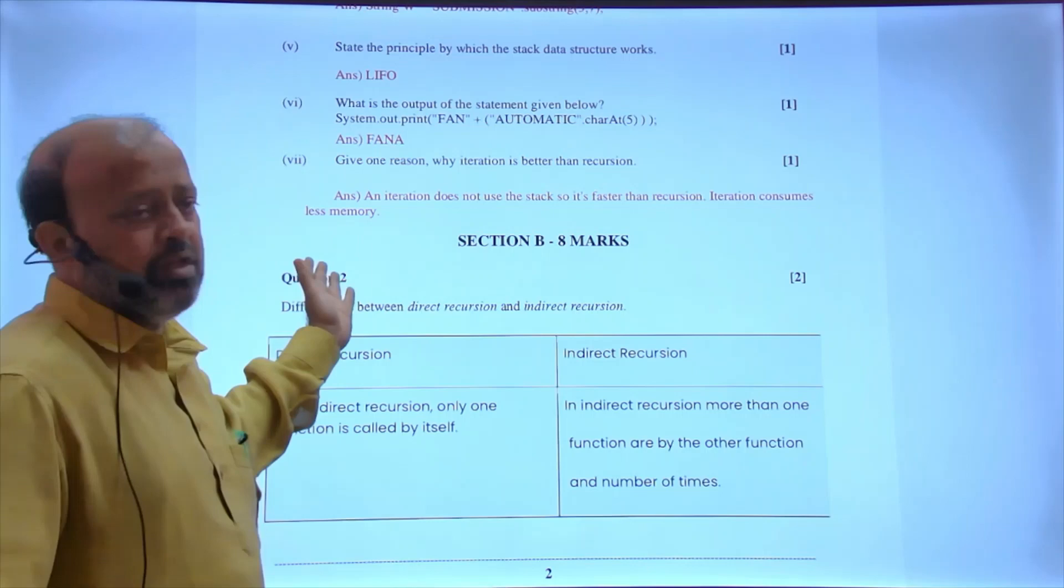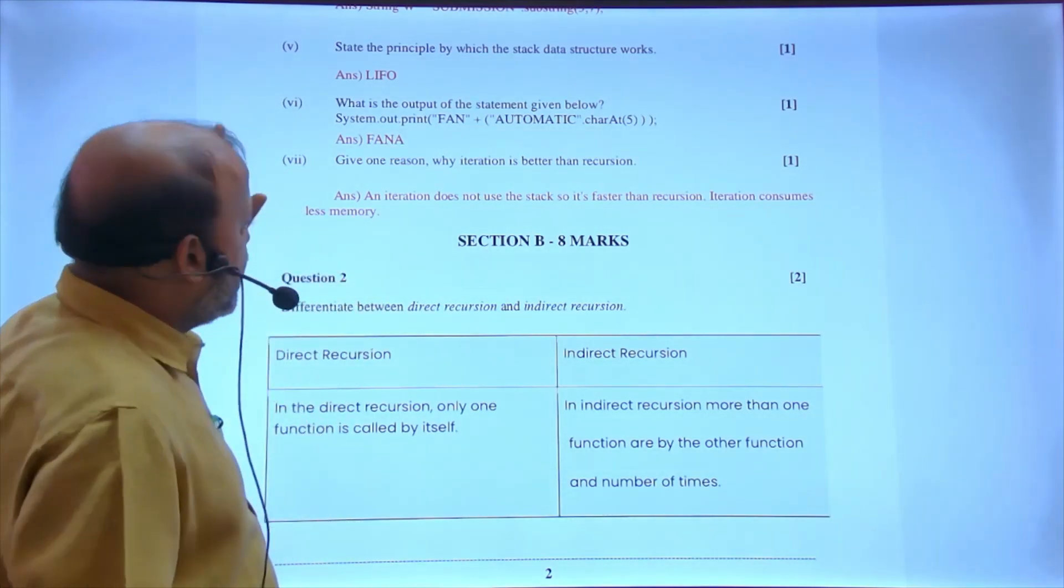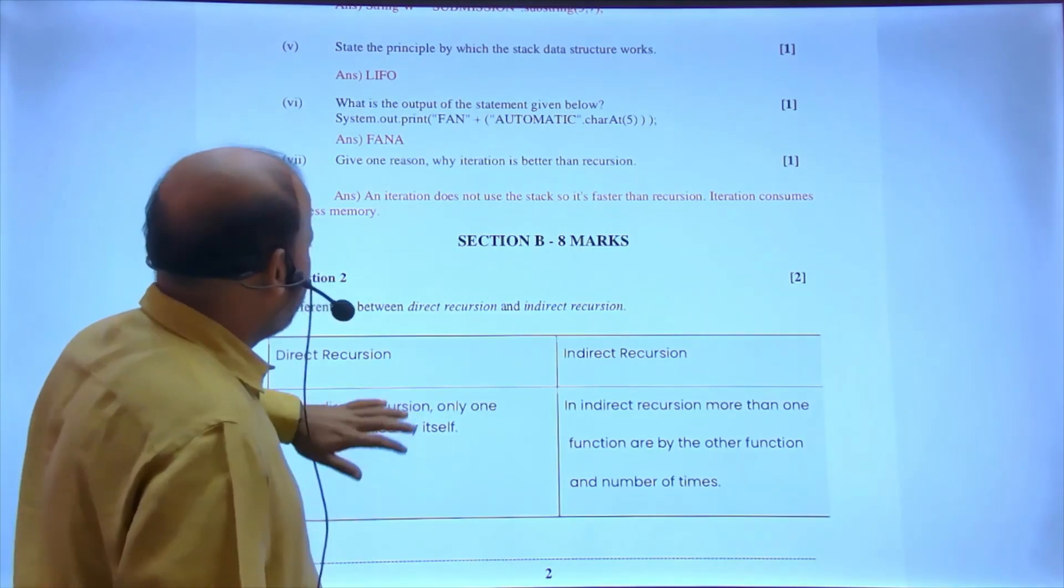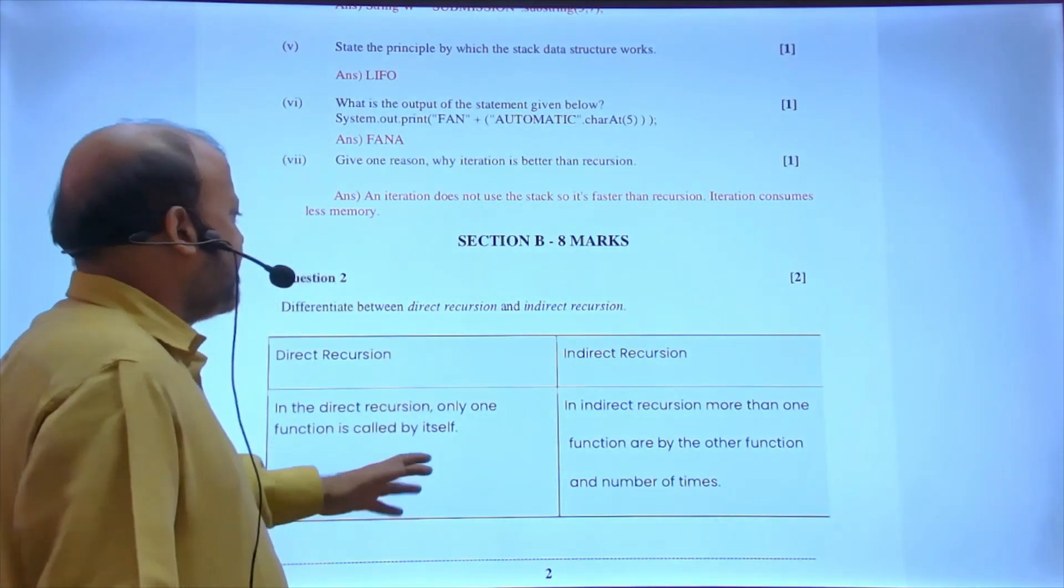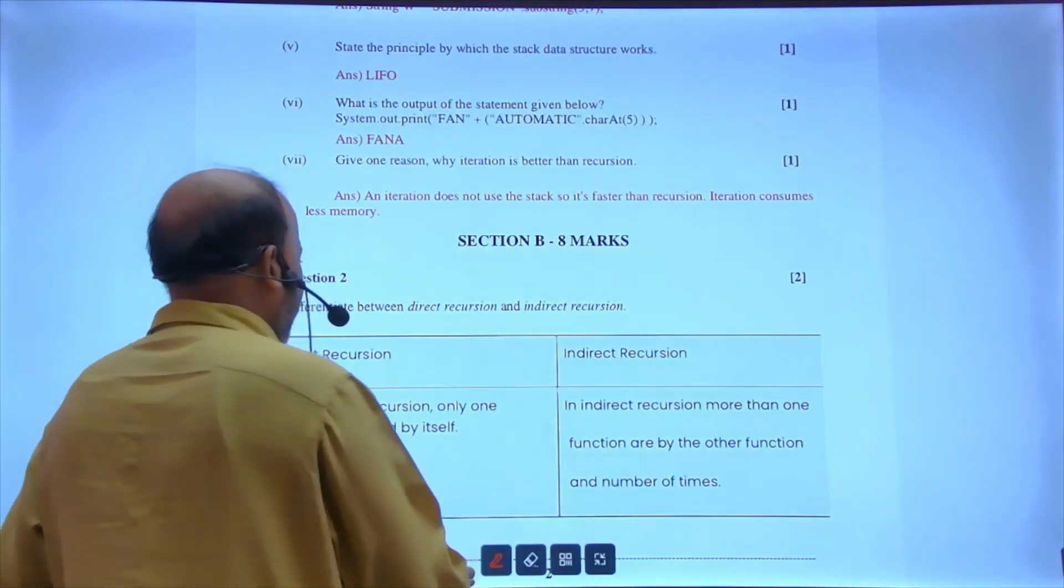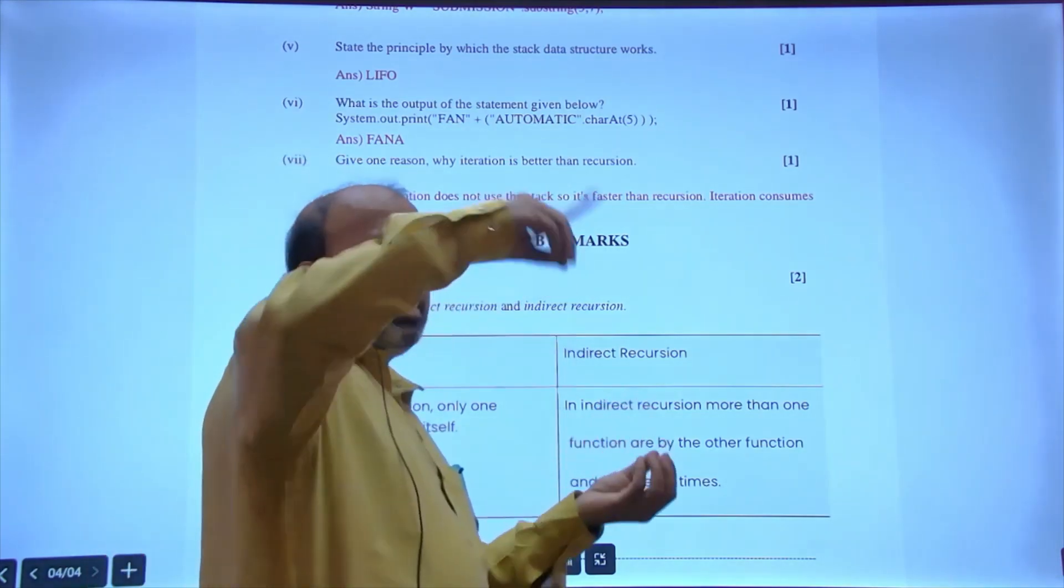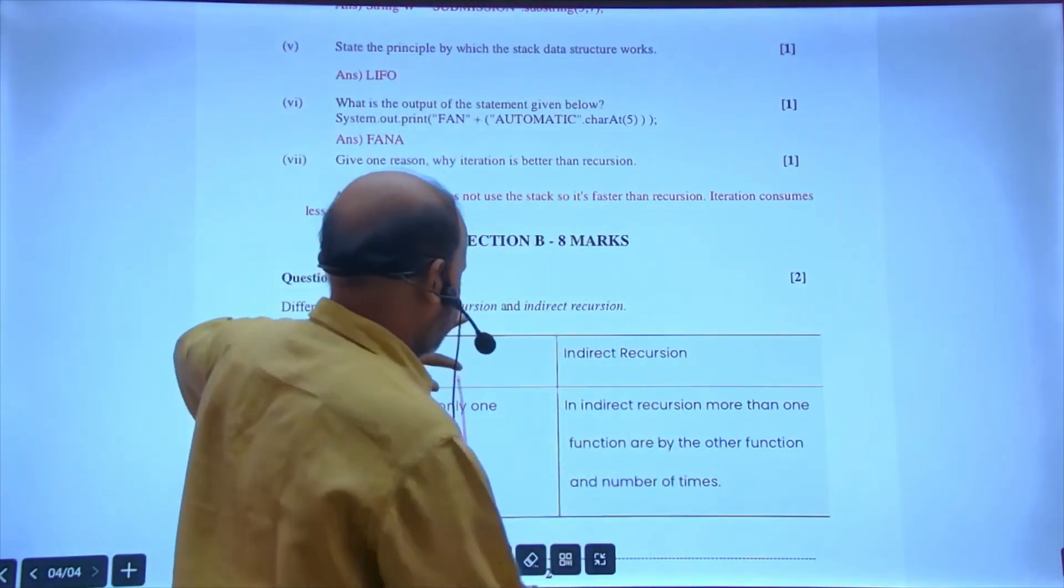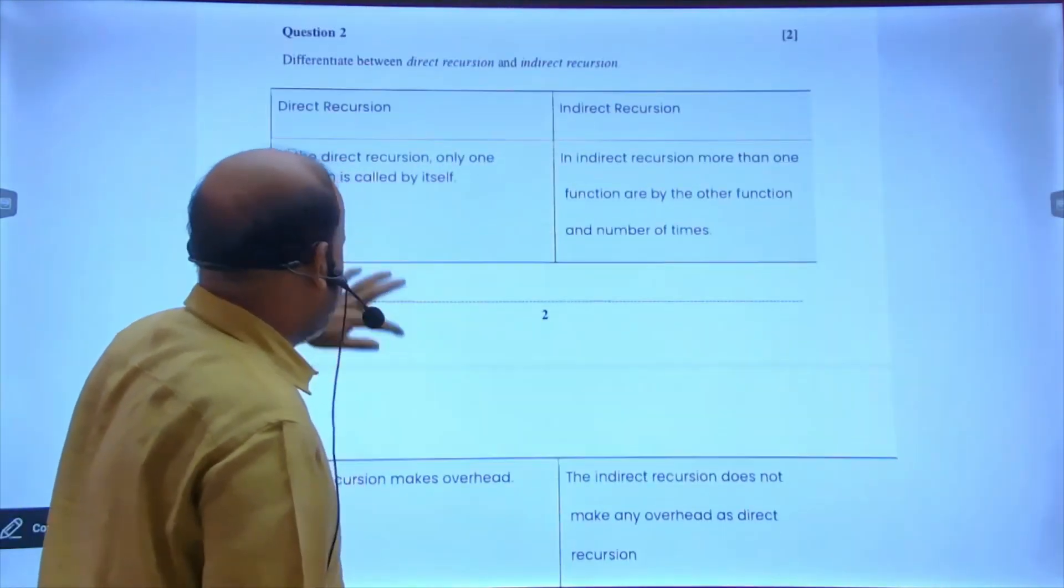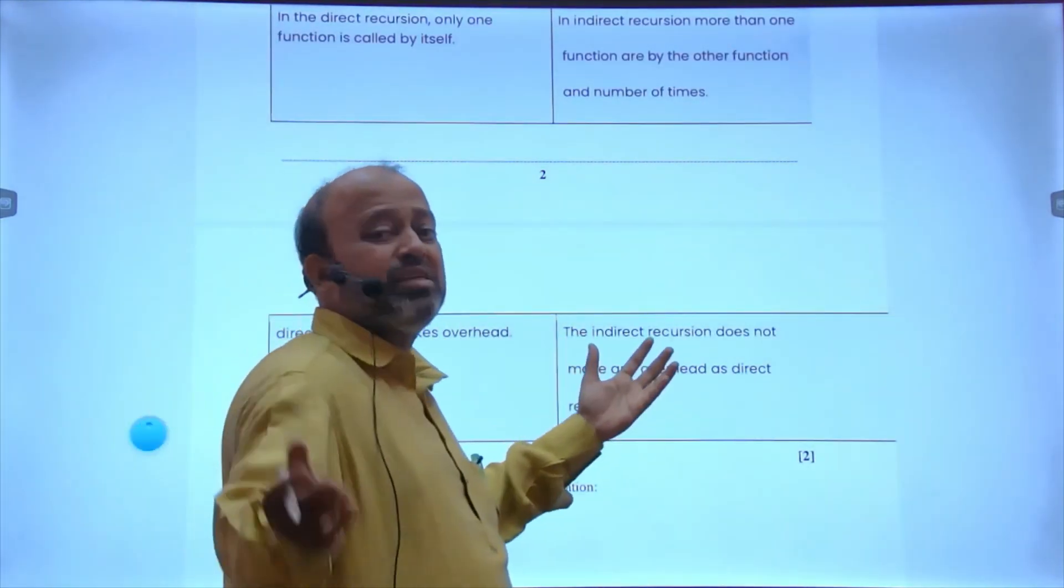Section A seven marks we have done. Next: difference between direct recursion and indirect recursion. You may get in some book, use Google. Direct recursion: only one function is called. Indirect: one function calls another function, which calls back. Max overhead versus less overhead - why? Stack memory concept.